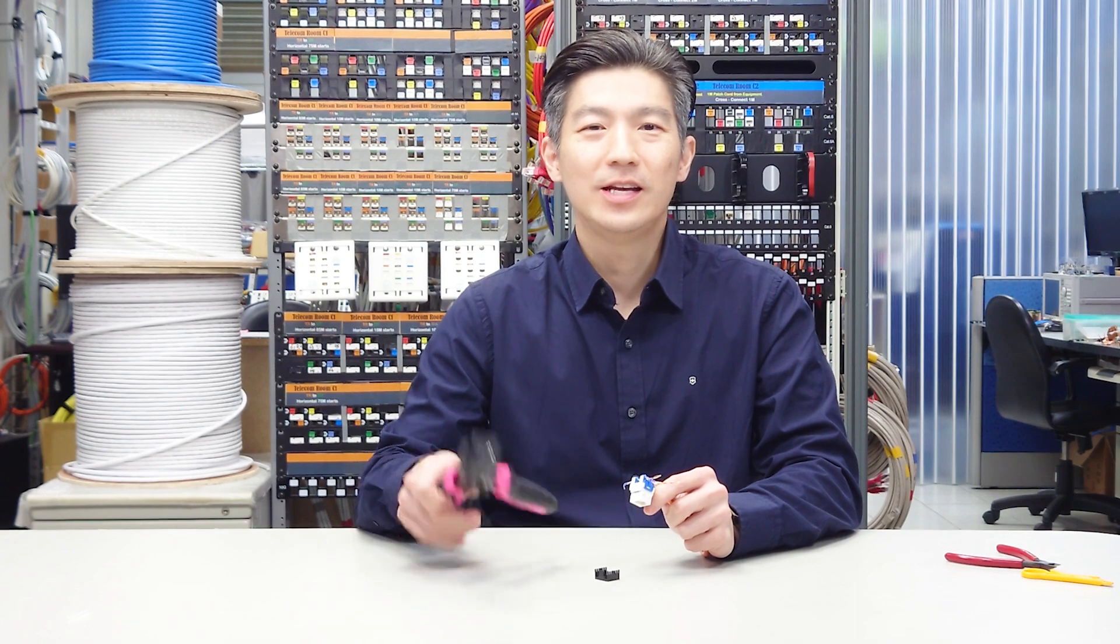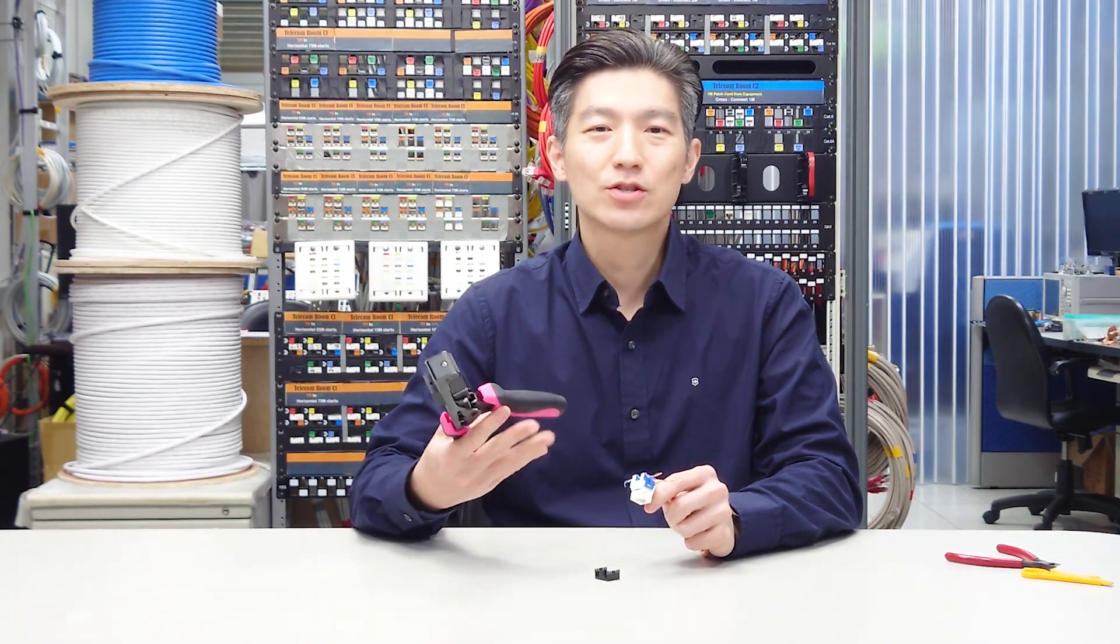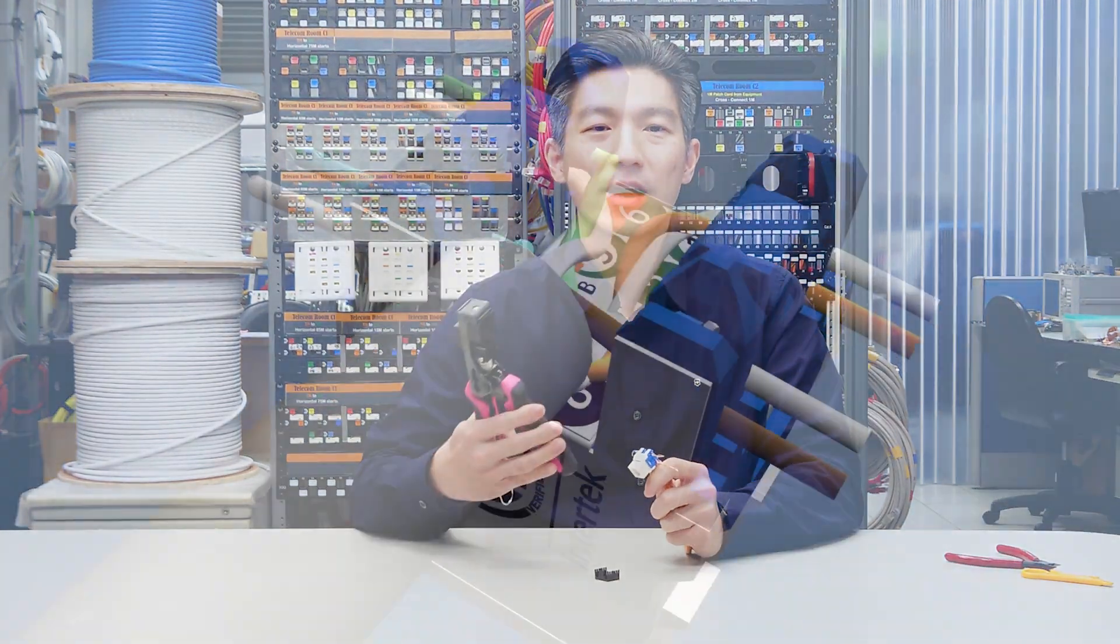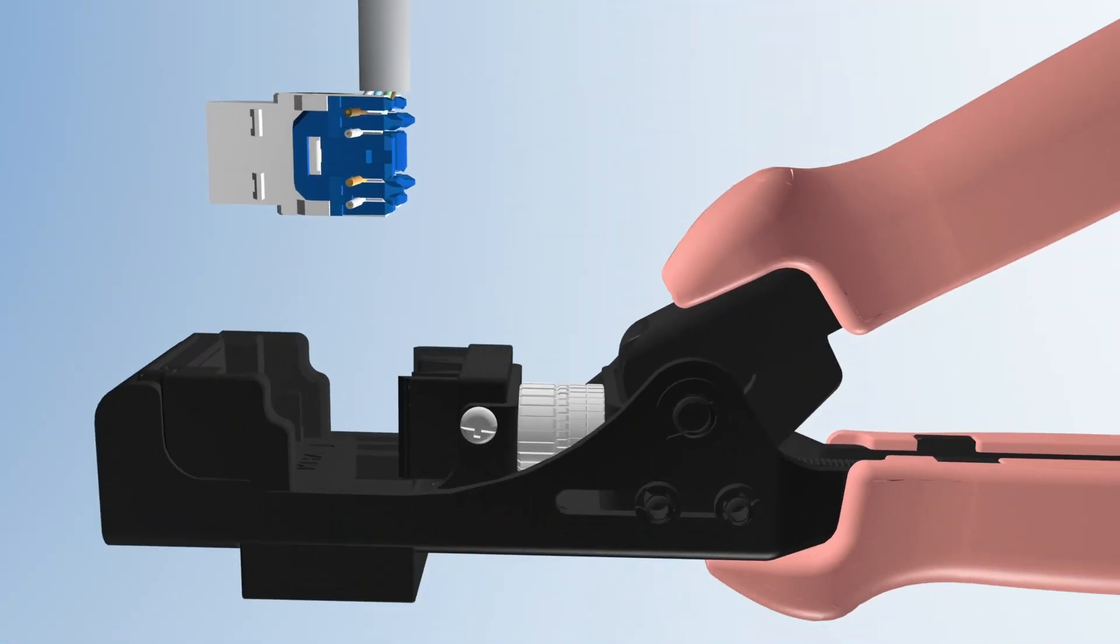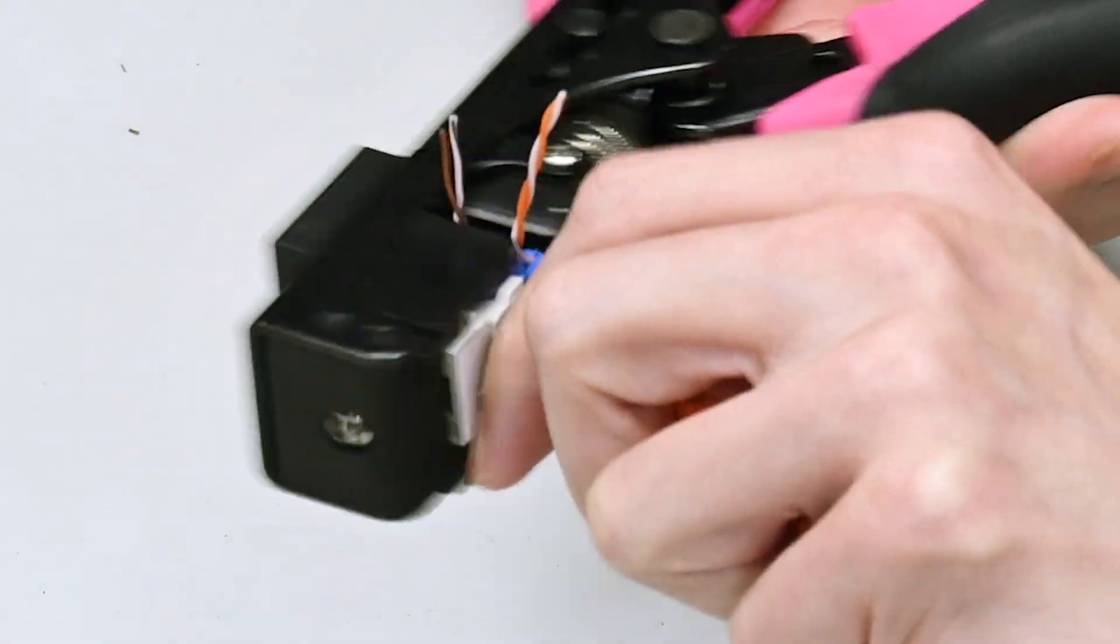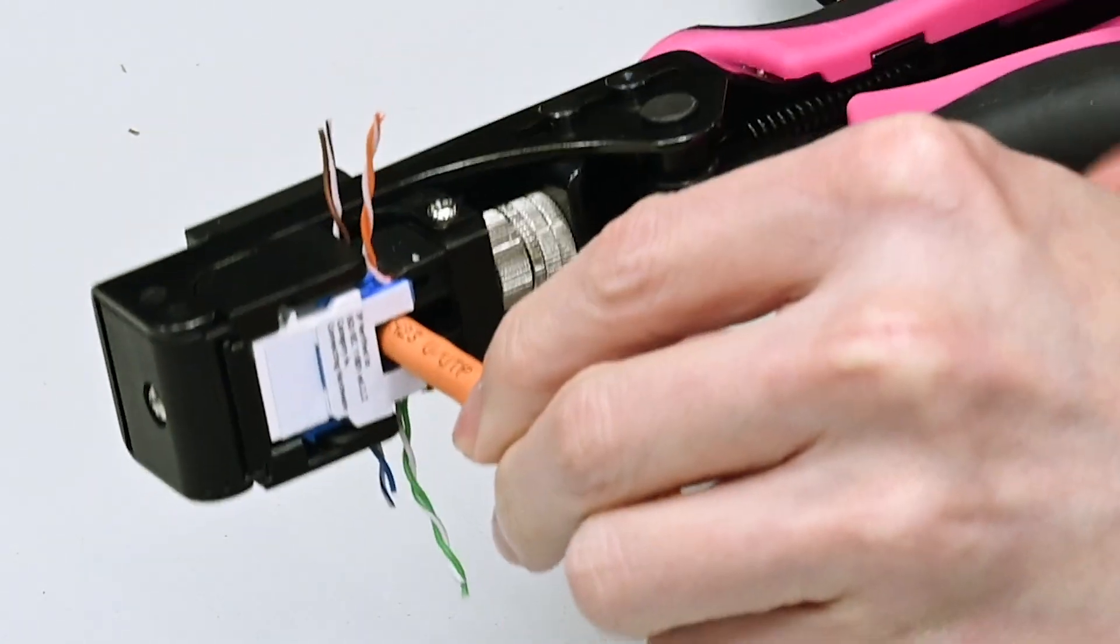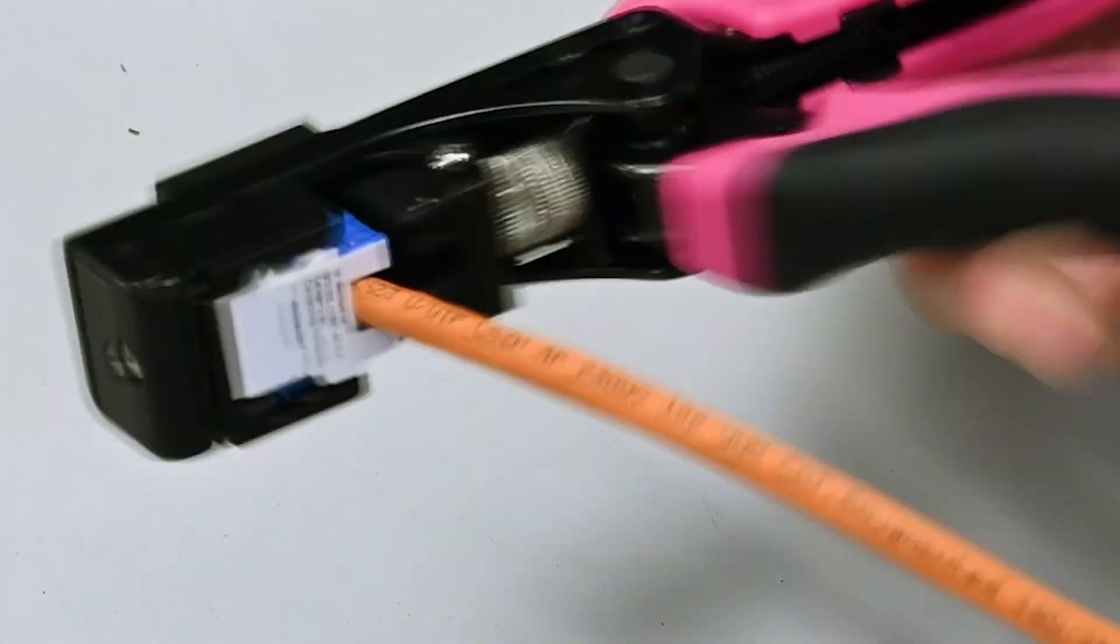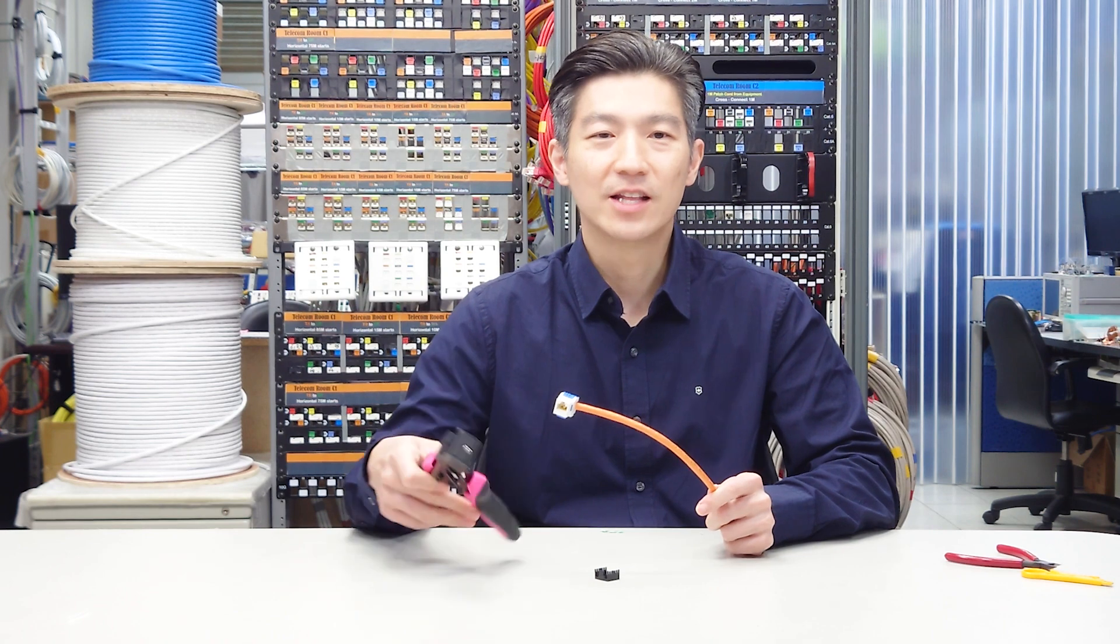Here comes the EZ termination tool. It does two jobs at once. Terminate all wires and cut off the unnecessary wire length at the same time. Squeeze the handle. And it's done. Nice and neat.